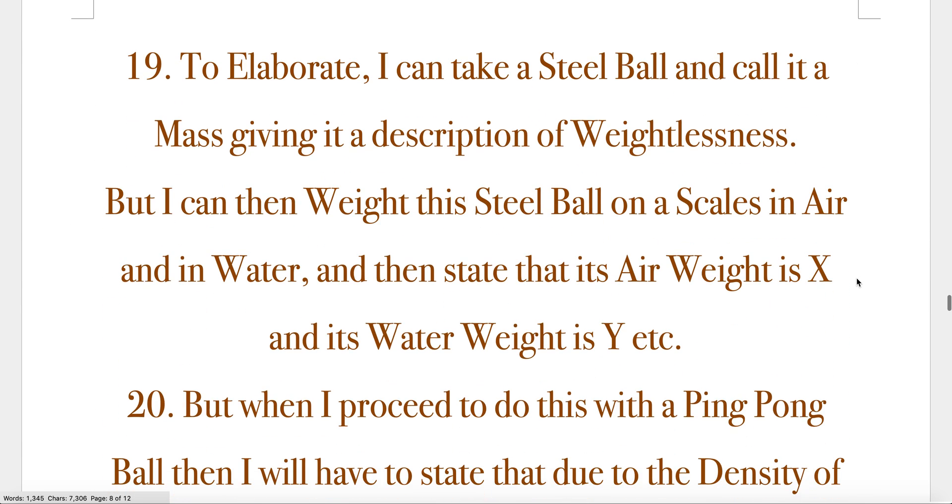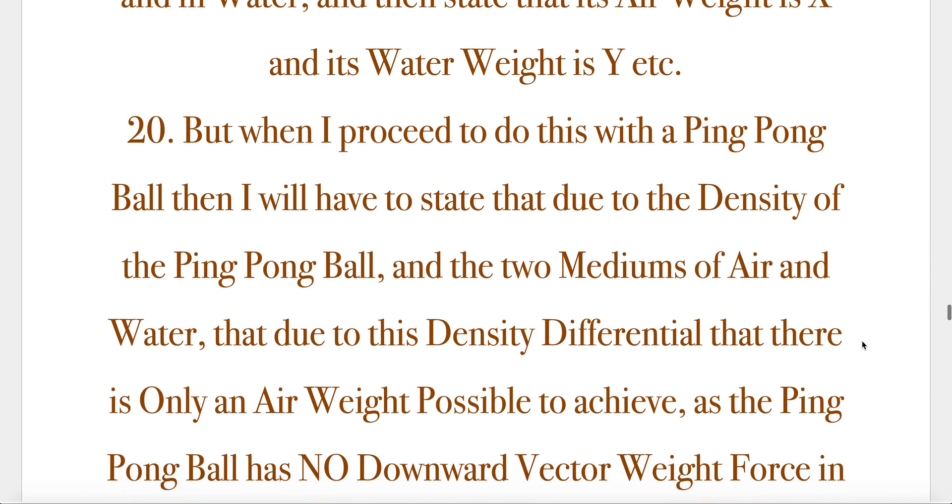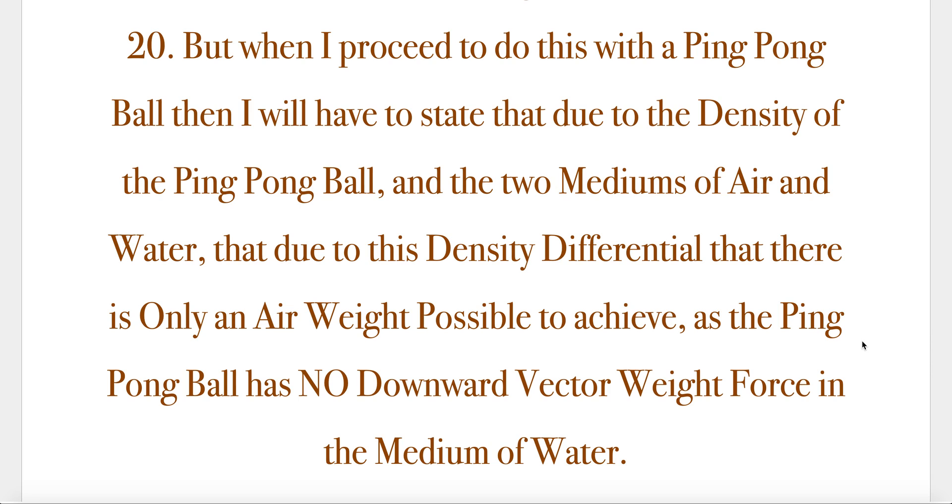To elaborate, I can take a steel ball and call it a mass, giving it a description of weightlessness. But I can then weigh this steel ball on a scales in air and in water, and then state that its air weight is X, and its water weight is Y, etc. But when I proceed to do this with a ping pong ball, then I will have to state that due to the density of the ping pong ball, that the two mediums of air and water, that due to this density differential, that there is only an air weight possible to achieve, as the ping pong ball has no downward vector weight force in the medium of water.